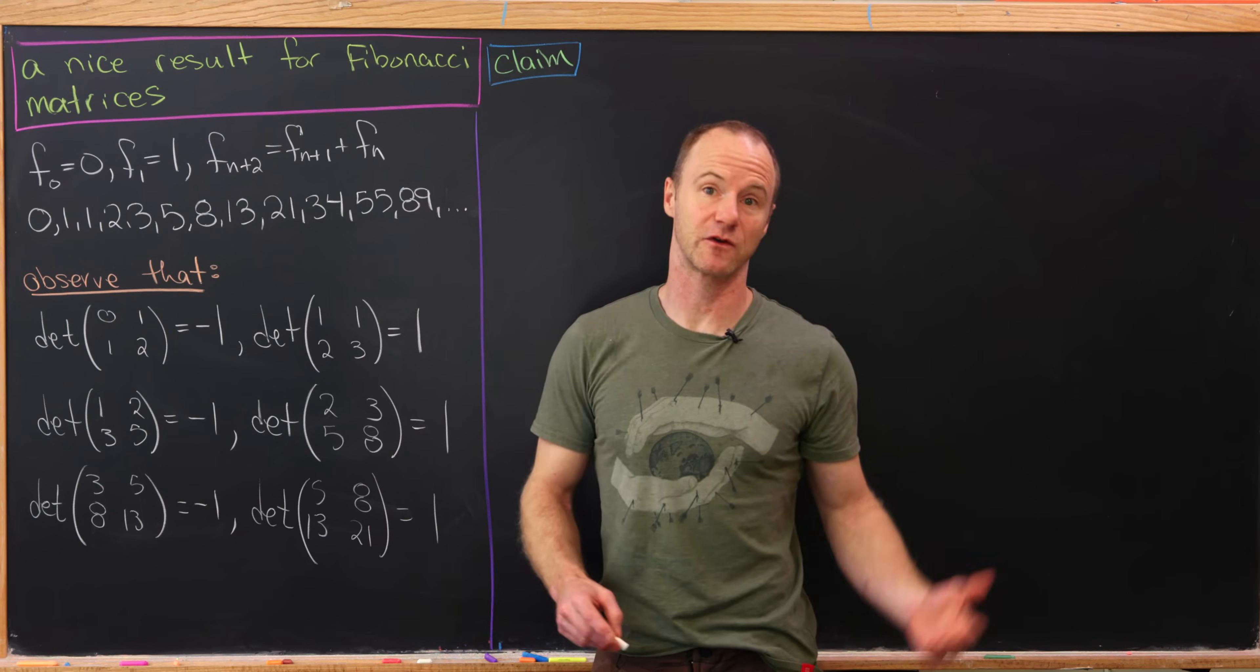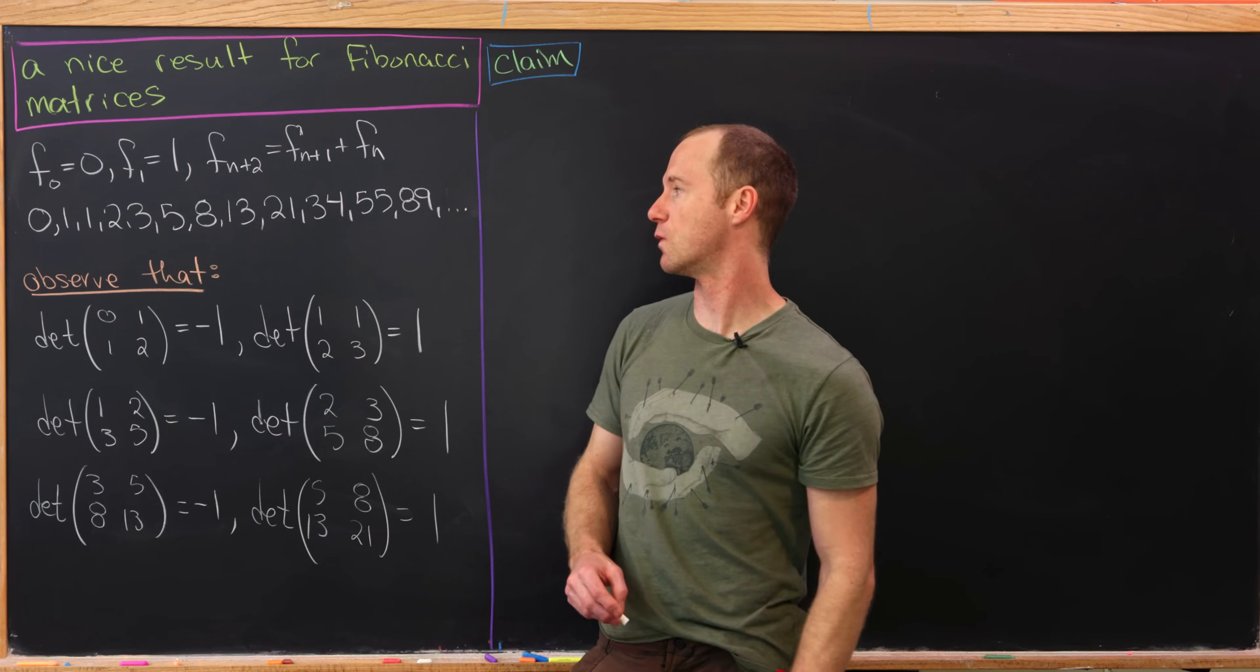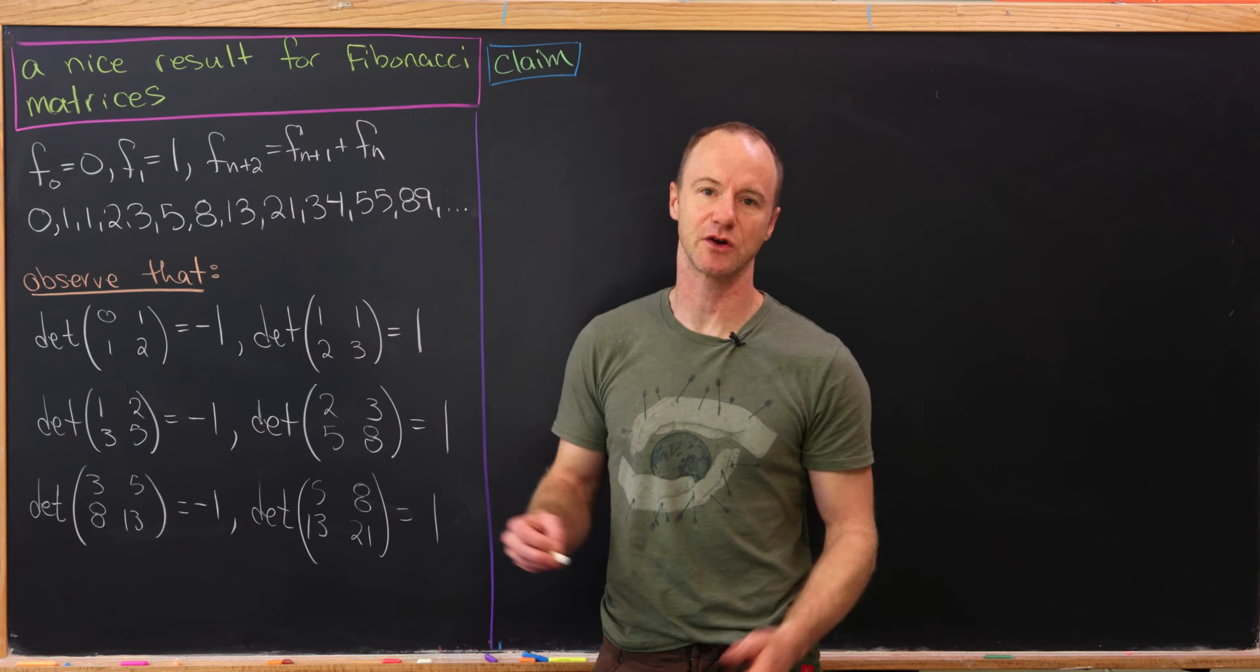So here's the first several Fibonacci numbers. We have 0, 1, 1, 2, 3, 5, 8, so on and so forth.